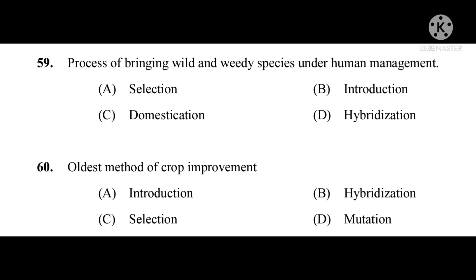Question number 59: Process of bringing wild and weedy species under human management. The correct answer is domestication. Question number 60: Oldest method of crop improvement. The correct answer is selection.